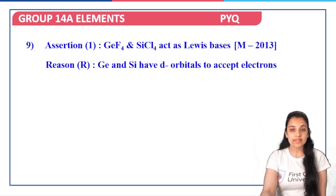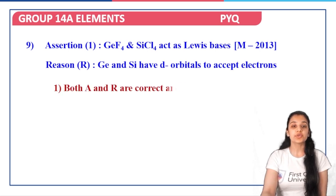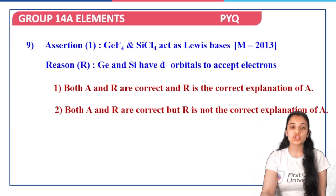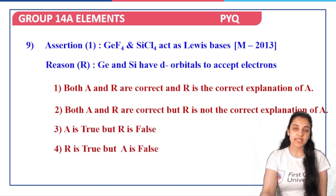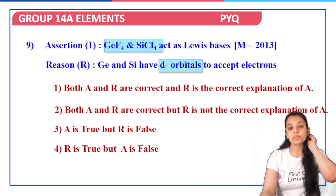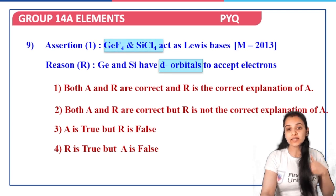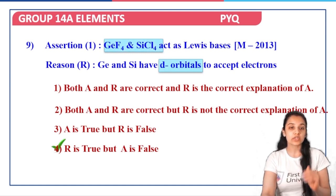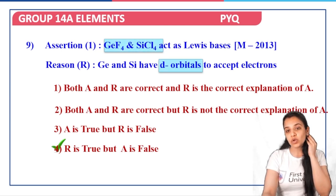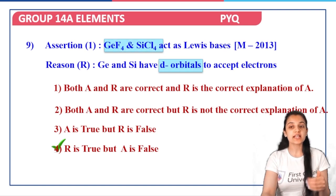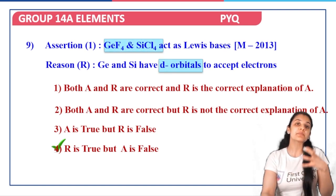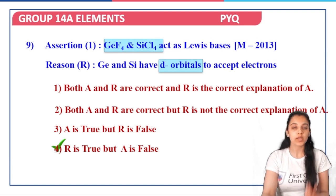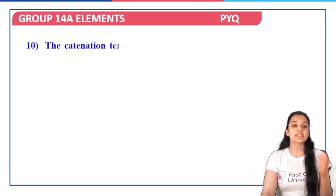Next: assertion — GeF4 and SiCl4 act as Lewis acids. Reason — germanium and silicon have orbitals to accept electrons. Looking at the assertion first: GeF4 and SiCl4 do not act as 'viewer spaces' (Lewis bases); the assertion that they act as Lewis acids needs evaluation. The reason — that they have orbitals to accept electrons — is correct, but the assertion itself is incorrect. Therefore option four is correct: A is false, R is true.